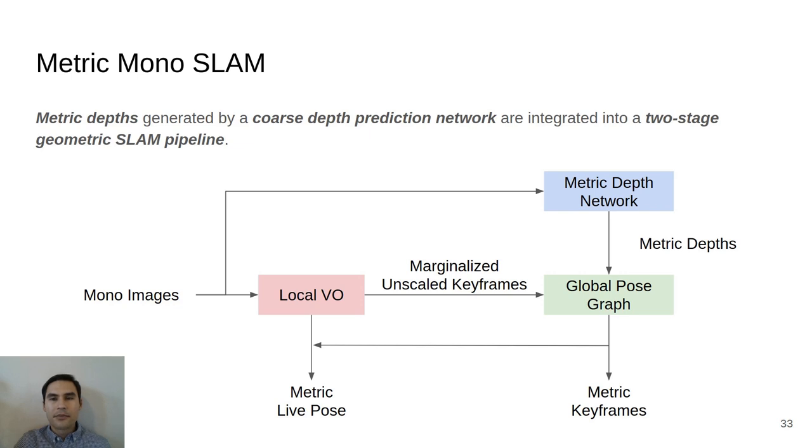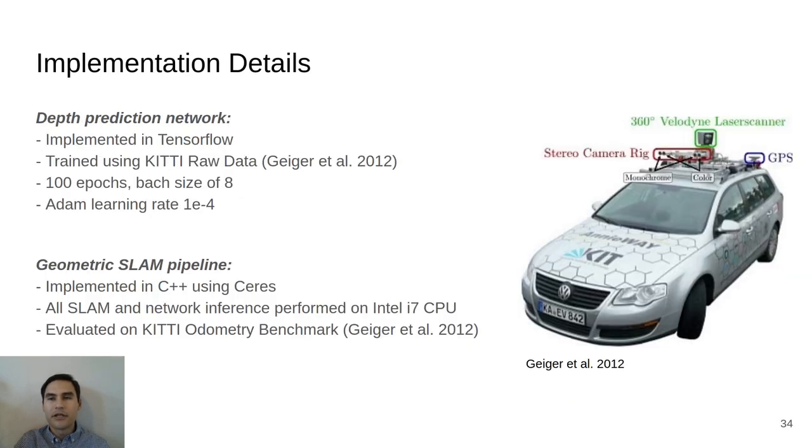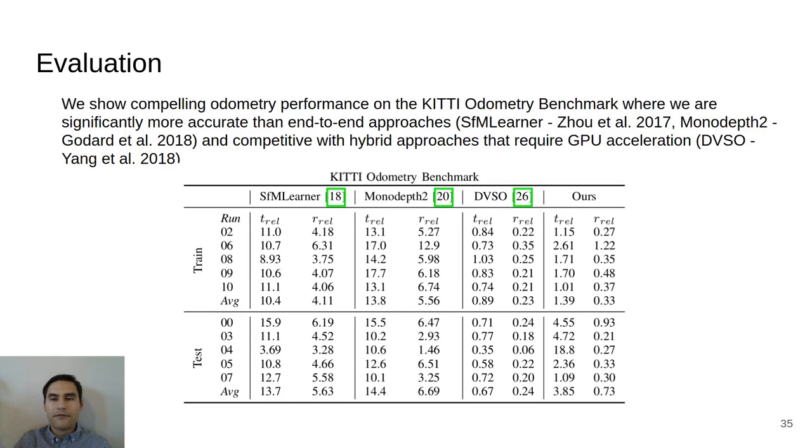We implemented our depth prediction network using TensorFlow and trained it using stereo images from the KITTI Vision benchmark suite. Our geometric SLAM pipeline was implemented in C++ using Ceres. All SLAM and network inference was performed on an Intel i7 CPU. We show compelling odometry performance on the KITTI Odometry benchmark where we are significantly more accurate in terms of relative rotation error and relative translation error than end-to-end approaches and competitive with hybrid approaches that require GPU acceleration.